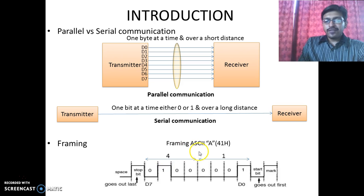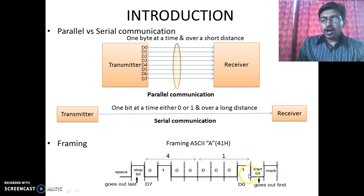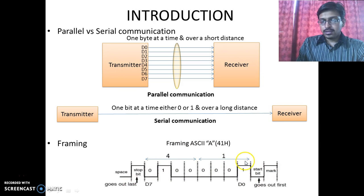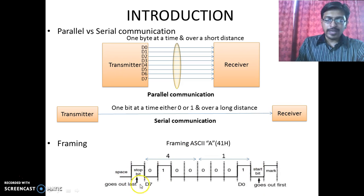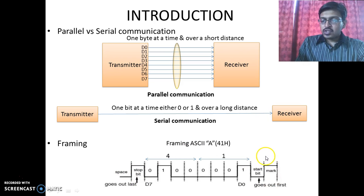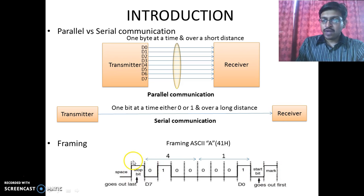In data framing, the data or an ASCII character is framed between a start bit and a stop bit. The start bit is always a single bit whereas the stop bit can be one or two bits. Also, the start bit is always active low whereas the stop bit is always active high.